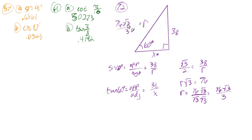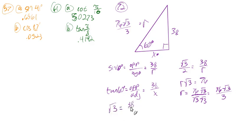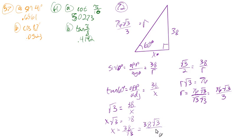Now we could use the Pythagorean theorem for x, but squaring 76√3/3 would be messy. Instead, use tan(60°) = √3 = 38/x. Multiplying both sides by x: x√3 = 38. Dividing by √3 and rationalizing the denominator gives x = 38/√3 = 38√3/3.